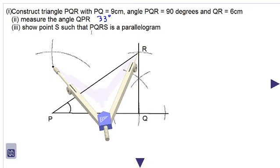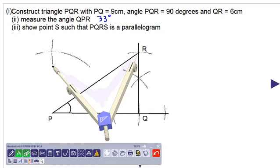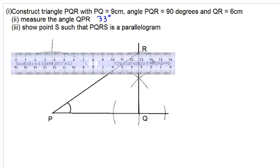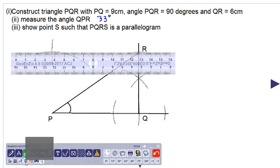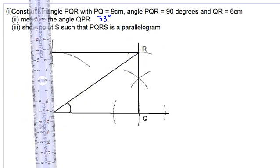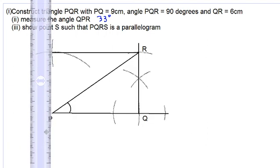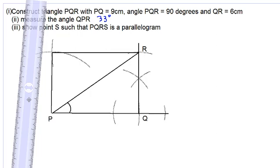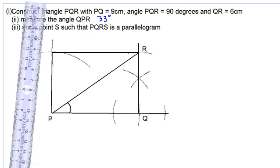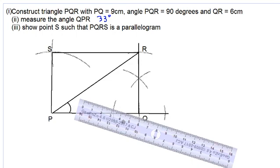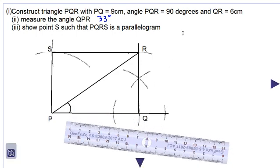We will take our long ruler and draw a line which connects point R to this new point of intersection, using our deeper pencil. We will also draw a line which connects this new point to point P. That will give us our parallelogram PQRS — this new intersection point is point S. This is the idea of how to approach this question. Thanks for watching and all the best to you.